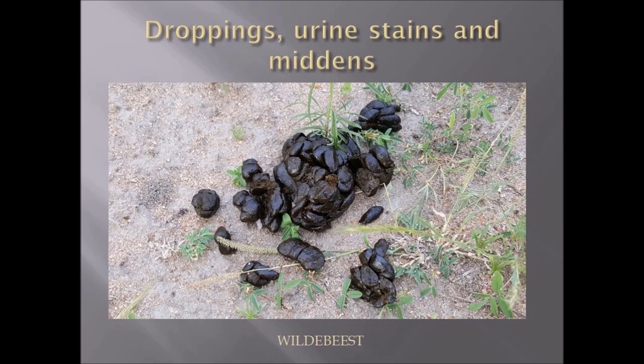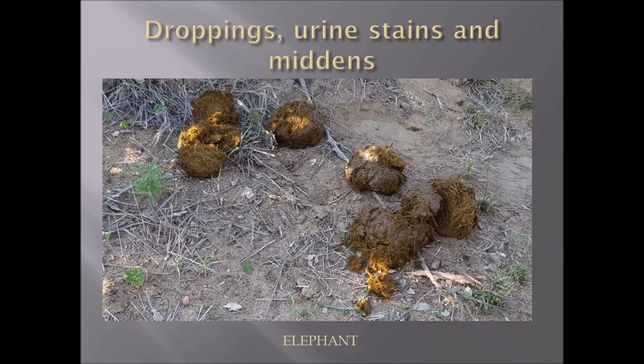Wildebeest have a kind of wet scat which can be very well formed or quite poorly formed, depending on the amount of moisture in the vegetation they are feeding on. It can be confused with bushbuck scat. Here we have elephant scat again — very large, barrel-shaped or lozenge-shaped droppings. Elephants can produce quite a lot of droppings every day, probably around a hundred kilograms.